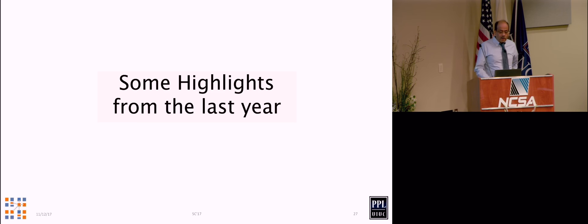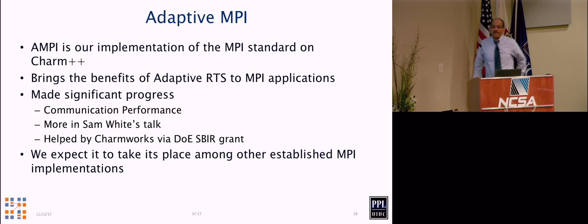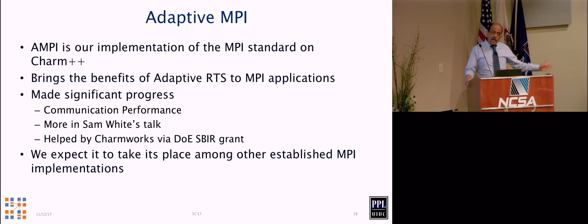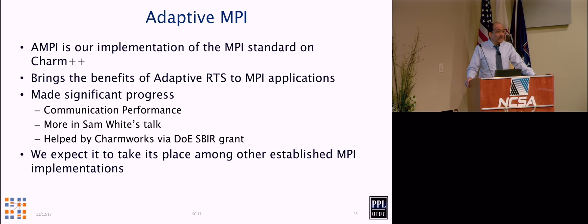Now for highlights from the last year. Adaptive MPI is our implementation of the MPI standard on CHARM++. I call it the old wine in the new bottle — for those who love CHARM++, why go to MPI? But for those who love MPI, it's very difficult to switch, so this provides the same interface with all the runtime capabilities. It has made significant progress during the last year, thanks to a DOE SBIR grant at ChamWorks, and largely because of Sam White.